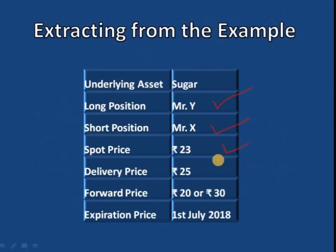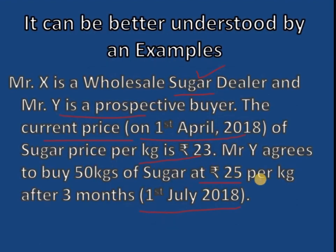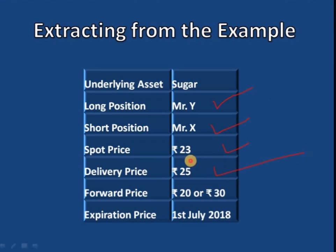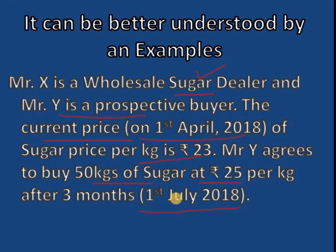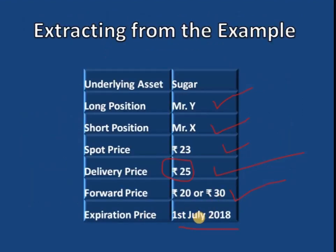The delivery price is 25 rupees per kg — the price at which Mr. X and Y agree to commit into the contract. The forward price is not known exactly; it is whatever the market price of sugar will be after maturity — it could be 20 or 30. We don't know exactly what will happen in the future. The expiration date of this contract is 1st July 2018.